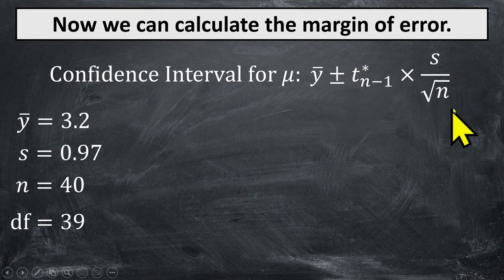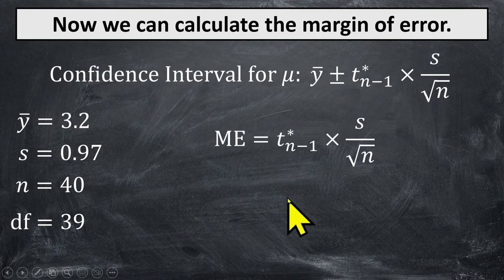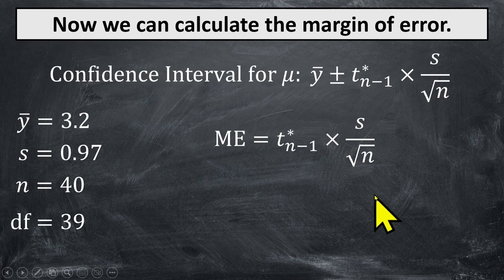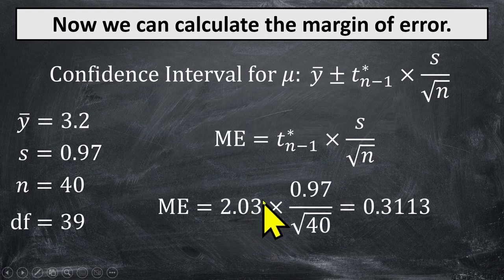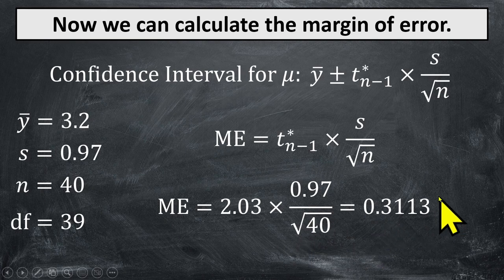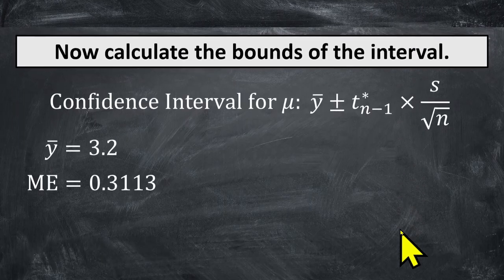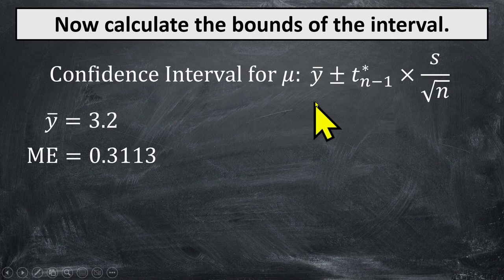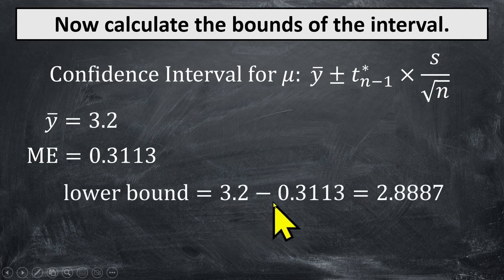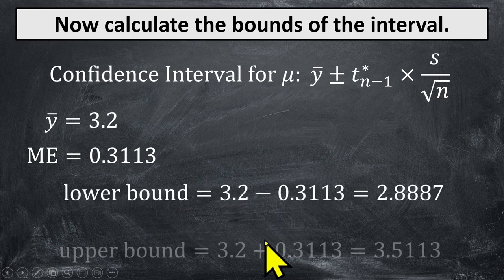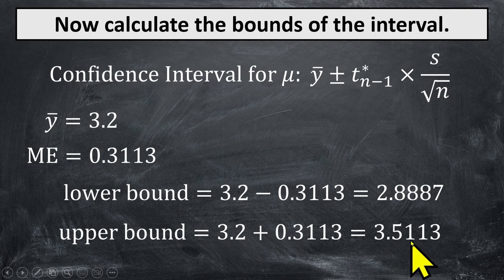We'll start by calculating the margin of error — that's the critical value multiplied by the standard error of the sample mean. So it's 2.03 from our t-table, times 0.97 — the sample standard deviation — divided by the square root of the sample size, giving us 0.3113. There's our margin of error. Now we calculate the bounds: the sample mean plus or minus the margin of error gives a lower bound of the mean minus the margin of error, and an upper bound of the mean plus the margin of error, giving us these bounds.